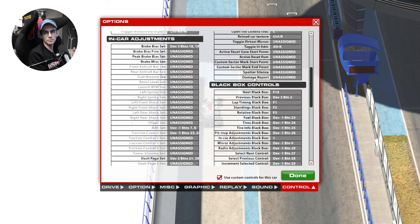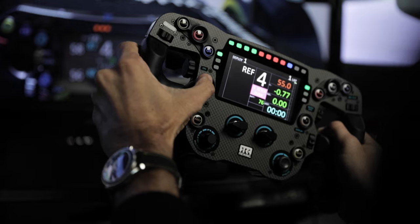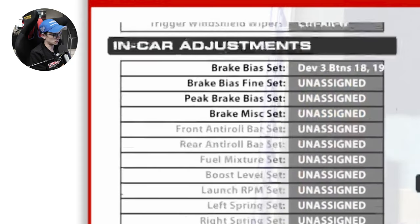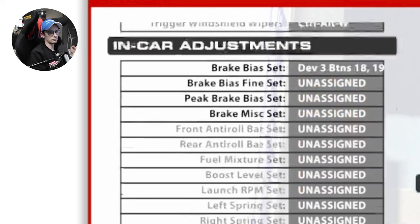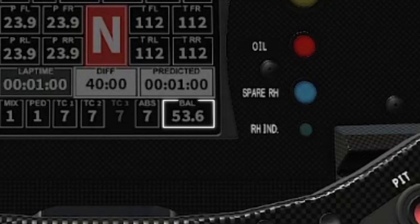This next section is all about in-car adjustments, starting with brake bias — your standard brake bias forward or back. Below that is brake bias fine set. On the Formula One car and many others, you may see that the brake bias is a whole number plus a decimal. On something like the Ferrari, scrolling through brake bias values won't affect that decimal, but on the F1 car you can affect both the whole number and the decimal point separately. It's really helpful to have brake bias and brake bias fine set mapped up.